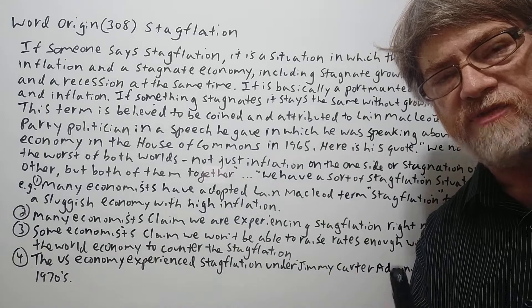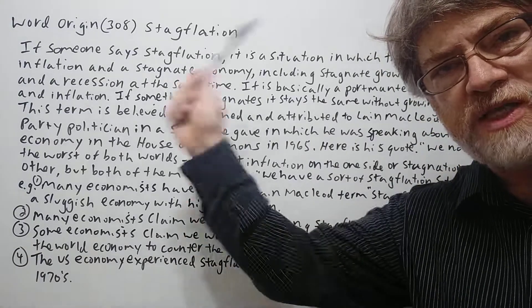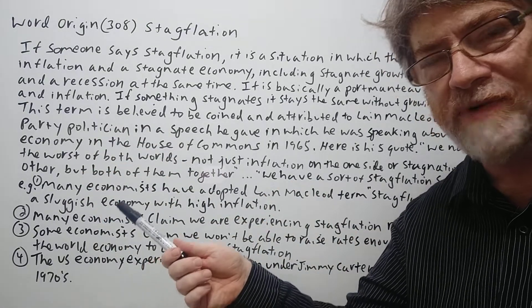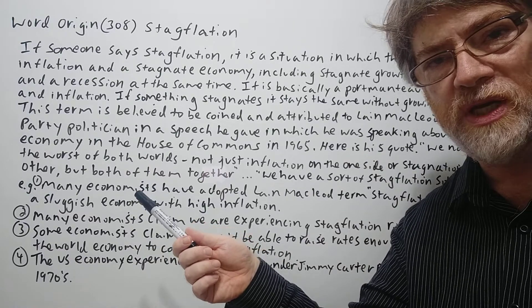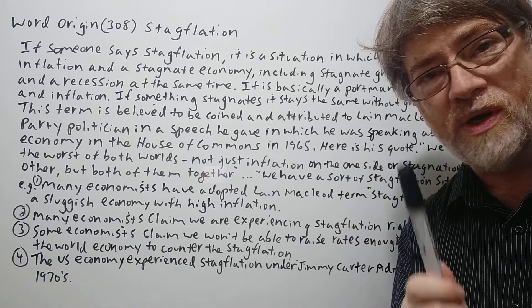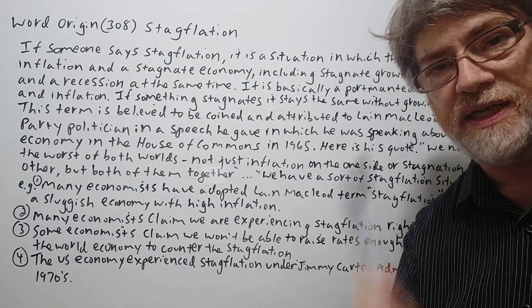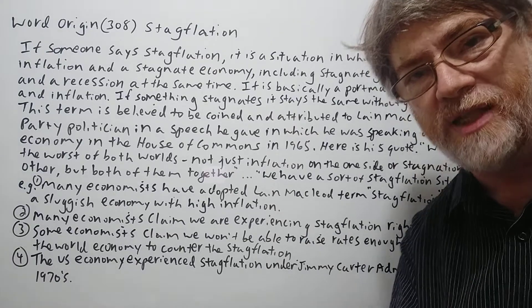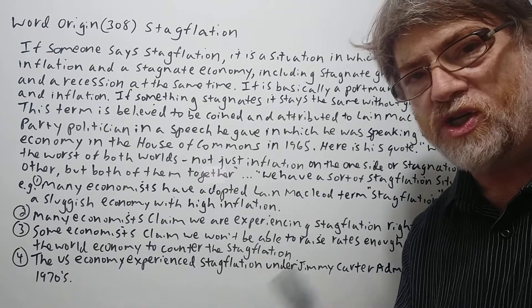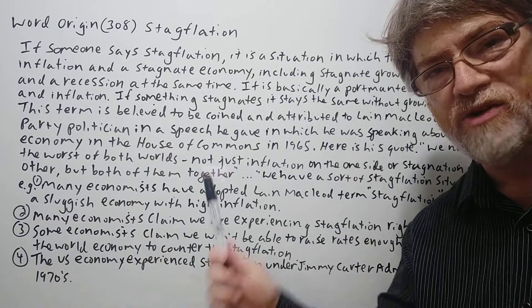We had stagflation in the 60s and 70s. Finally in the 70s we got out of it by raising rates to a really, really high number — it was double digits. We raised it up to like 12, 13, 14, 15, 16 percent. If you did that to the world economy now you'd probably crash it, because now we have so much more debt in the world. We didn't have that much debt back then, and every country is greatly in debt.